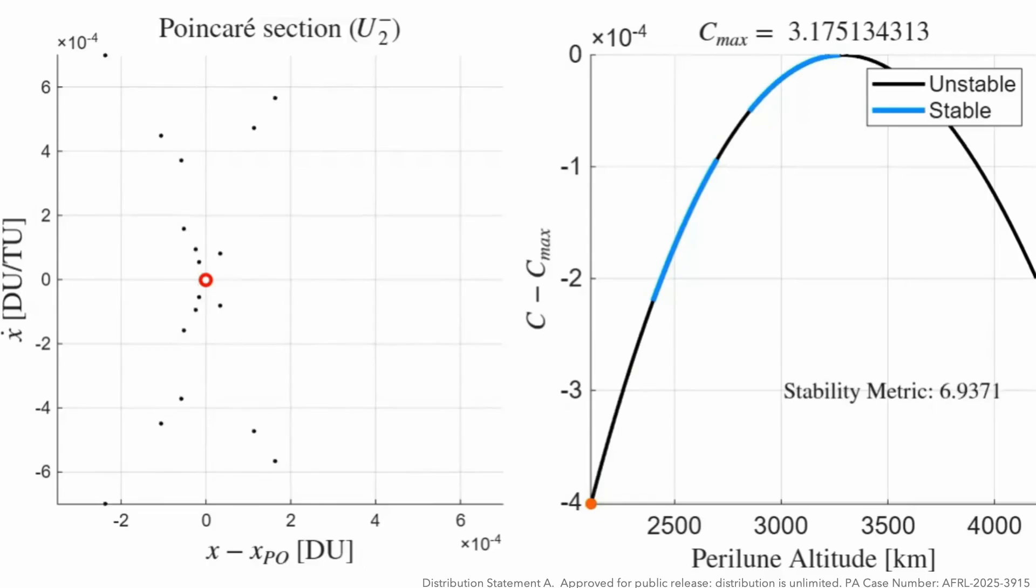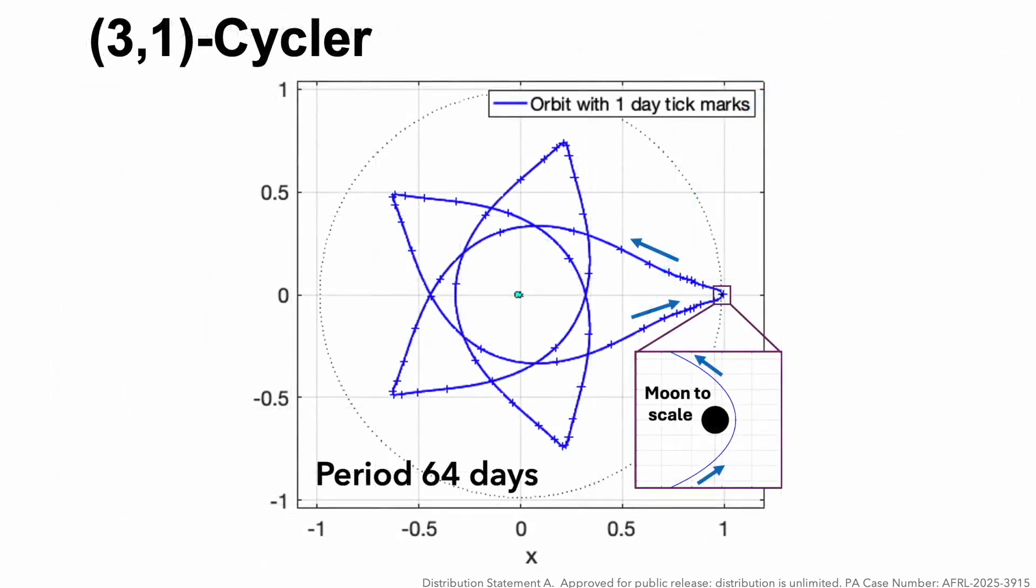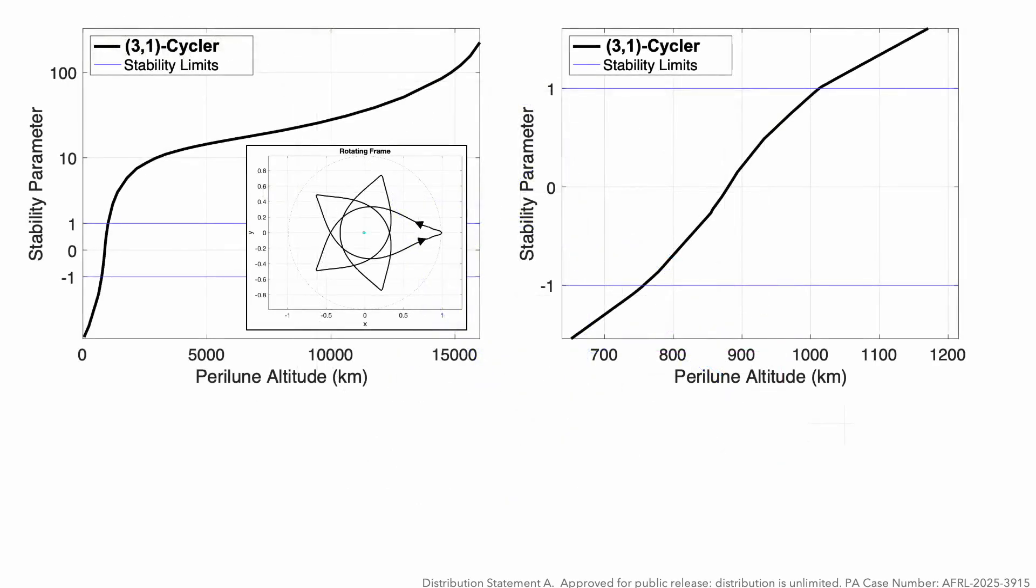Whereas the stability metric only provides a local measure of stability, we can get a measure of the robustness by the size of the largest torus, beyond which is a chaotic sea that's connected to regions of interest like L1 and L2 regions.